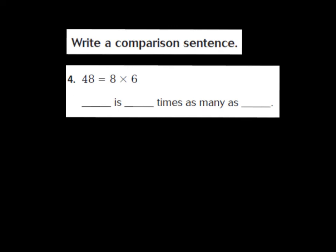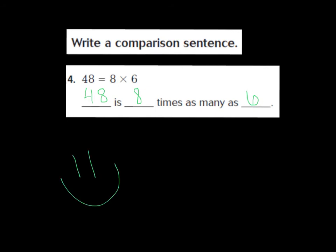Boys and girls, let's look at number four. They want us to write a comparison sentence. Our equation is 48 equals eight times six. I would like you to try this question on your own. Our comparison sentence says: hmm is hmm times as many as hmm. Go ahead and pause the video, answer the question, and press play and we'll go over the answer together. Okay, let's go over our answer. The 'is' represents our equal sign. So 48 equals — 48 is eight times as many as six. Did you get that one right, boys and girls? Great job. Let's move on.